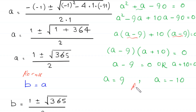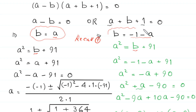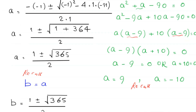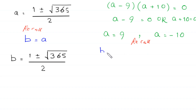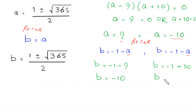To find the values of b, we recall that b is equal to negative 1 minus a. When a equals 9, we get b equals negative 1 minus 9, so b equals negative 10. When a equals negative 10, we get b equals negative 1 minus (negative 10) equals negative 1 plus 10, so b equals 9.